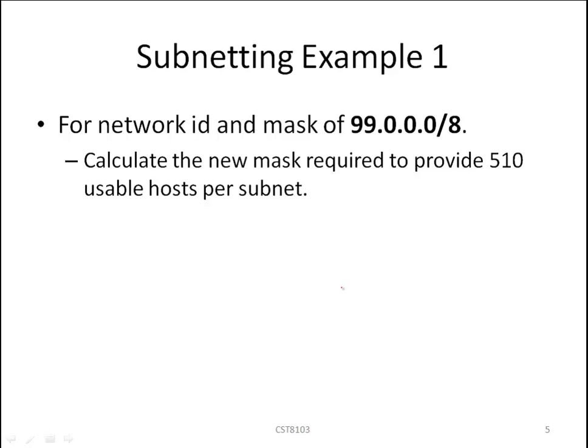Calculate the new mask required to provide 510 usable hosts per subnet. Recall that we have three formulas: 2 to the B, 2 to the H minus 2, and 32. Everything has to be equal to 32 in IPv4 subnetting.